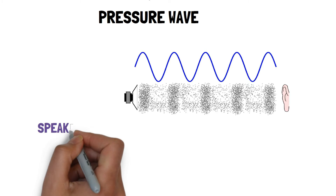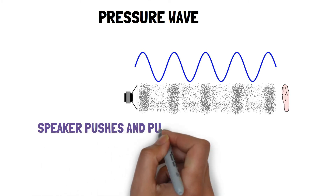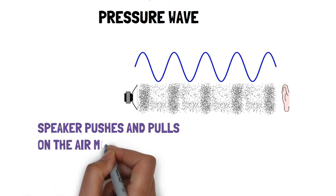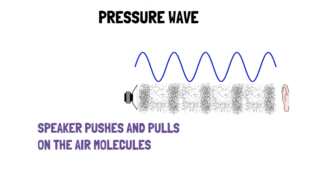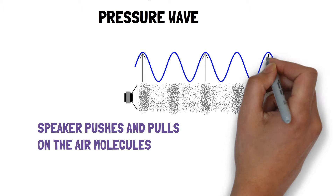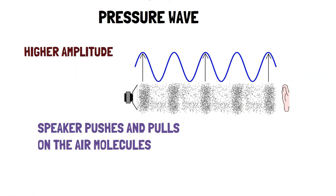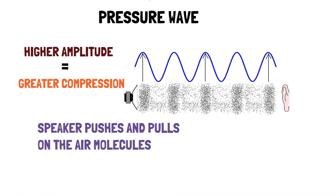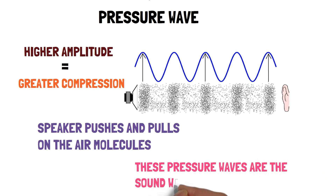When speakers move in and out, they create pressure waves by compressing and decompressing air molecules, which results in the creation of sound. If we look carefully at any sound wave, we can see that higher amplitudes represent greater compression of air molecules — the higher the amplitude, the greater the compression and the louder the sound.